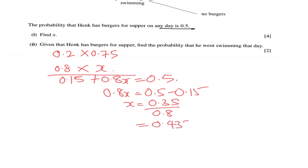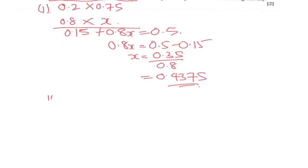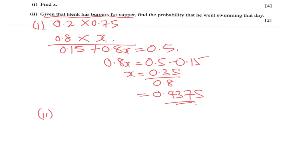For part two, given that Hank has burgers for supper, that's a conditional probability, find the probability that he went swimming that day. So probability of going swimming and eating burger, that's probability of S intersecting with B over P of B.